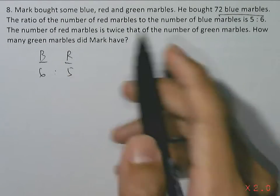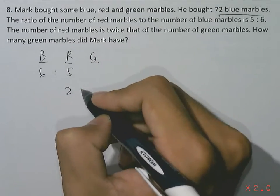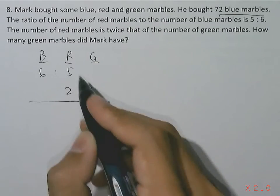The number of red marbles is twice that of the green marbles. So if we have green here, red to green - red is double the green - the ratio would be 2:1. So we have two ratios here.